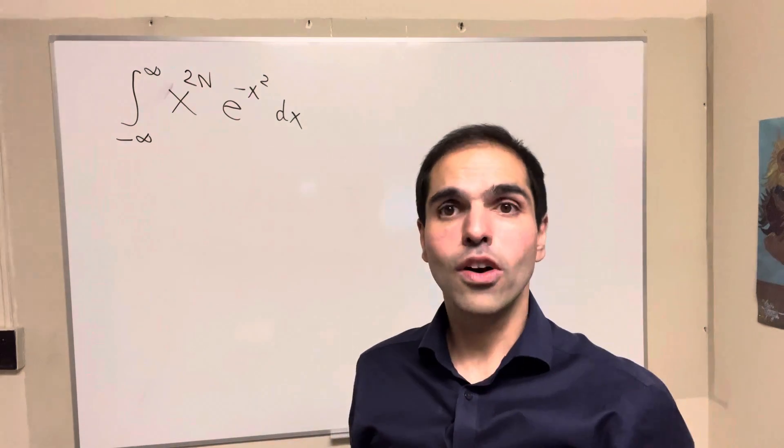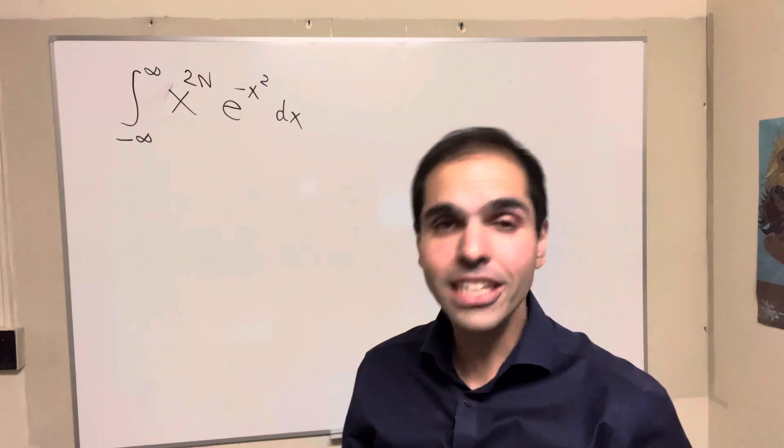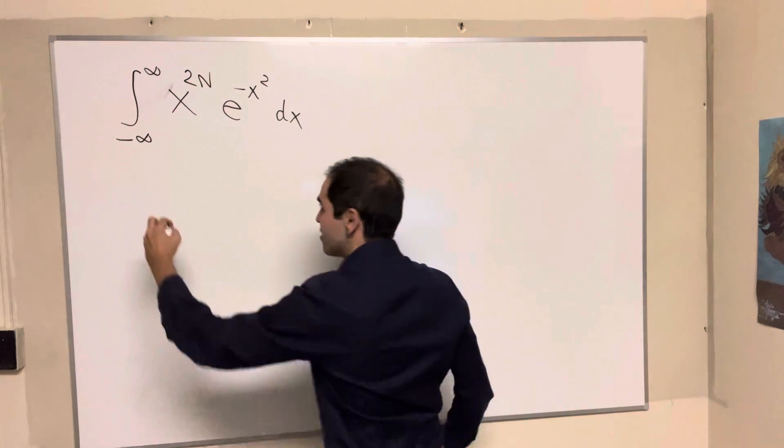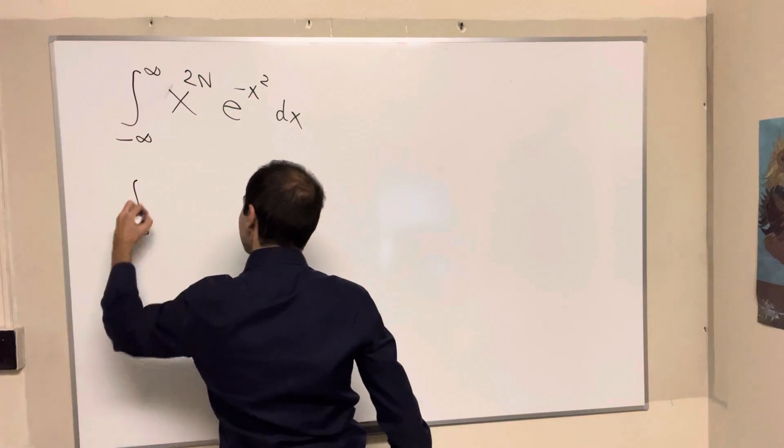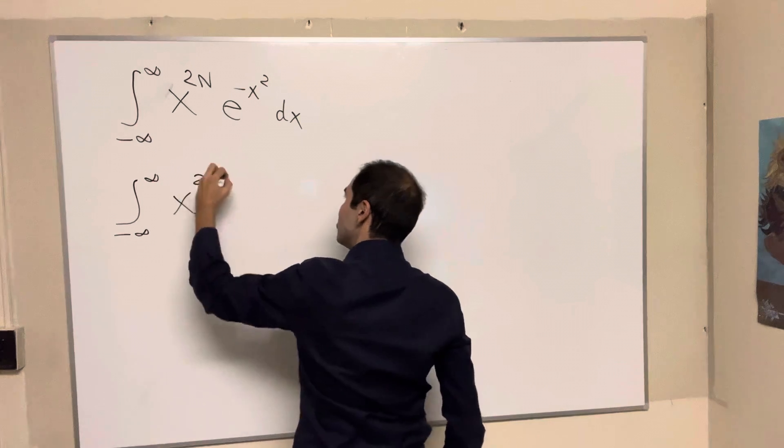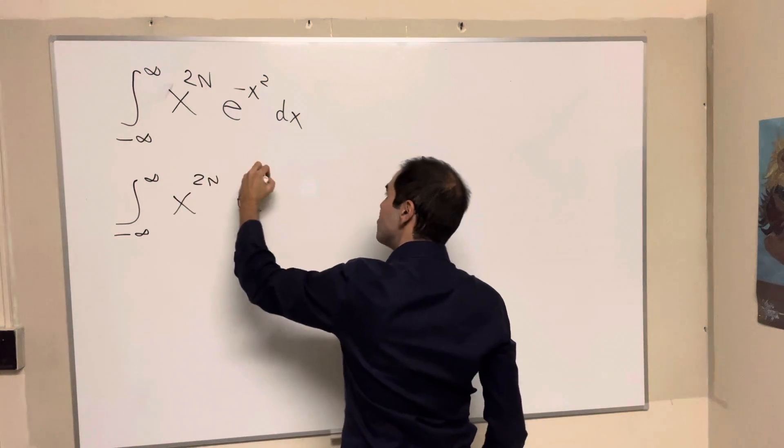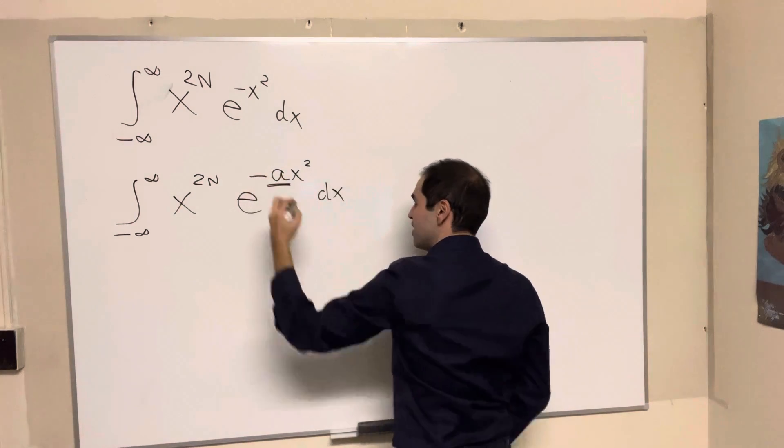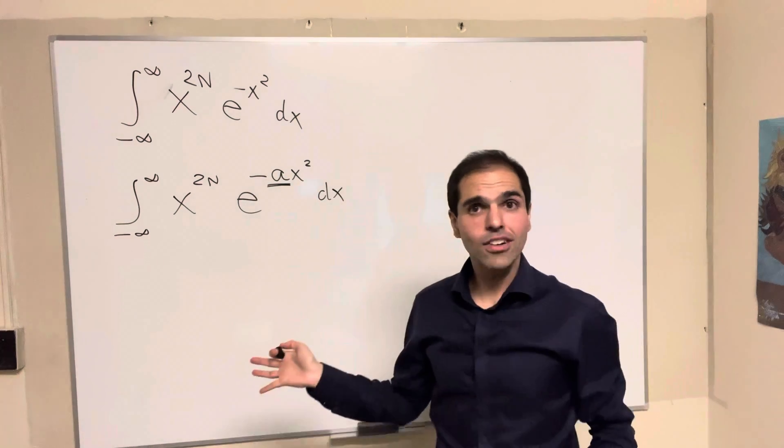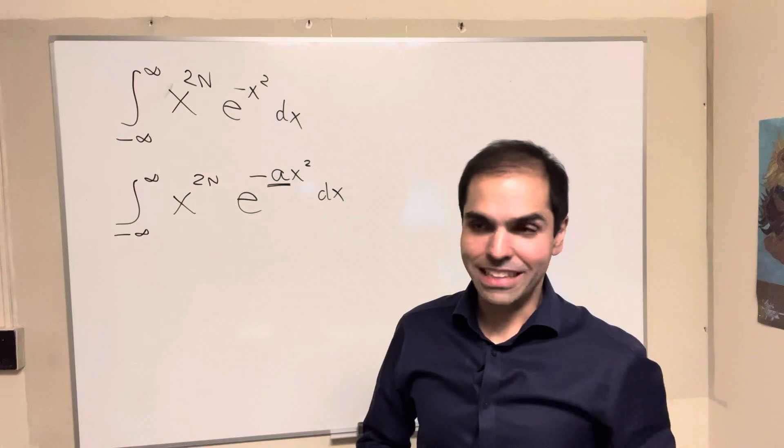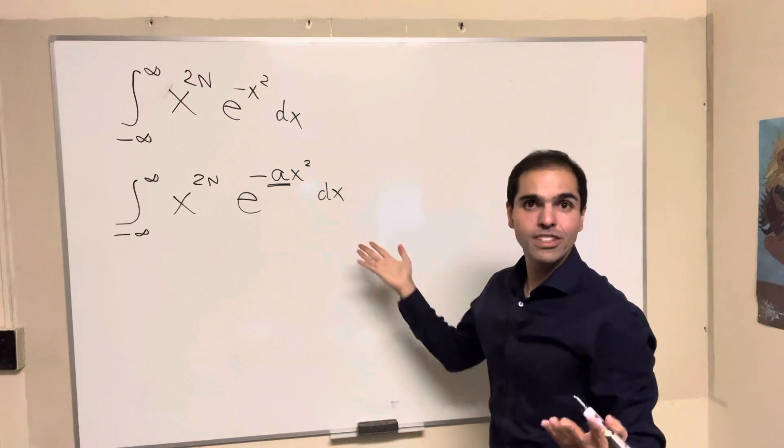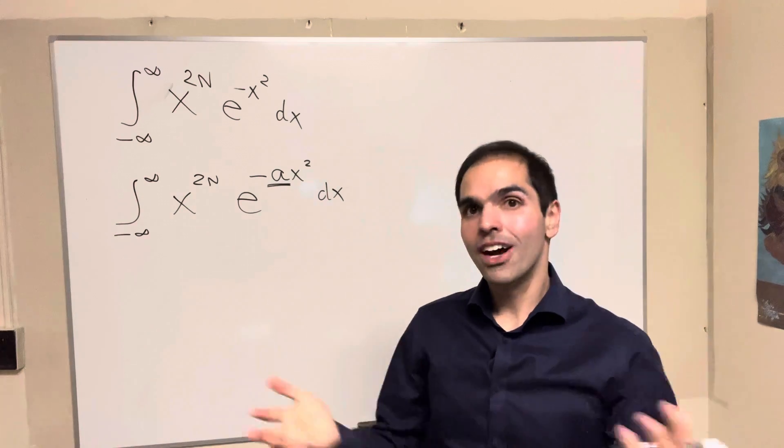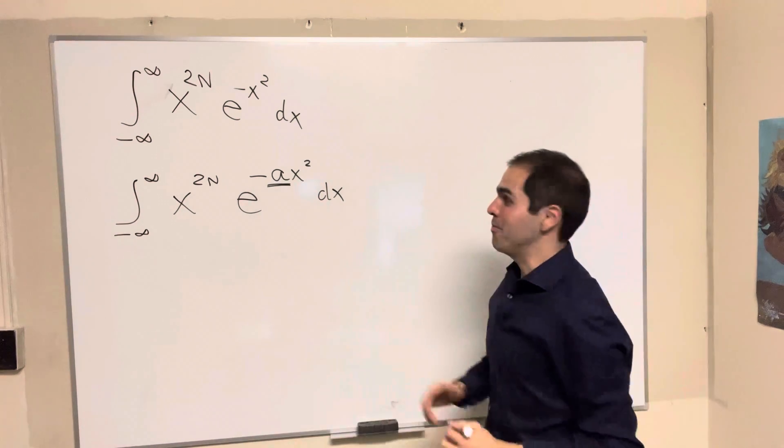And the way to solve this problem is to make it even more complicated. So instead of solving this, let's solve the integral from minus infinity to infinity of x to the 2n e of minus a x squared dx. Kind of like a reverse Feynman technique, if you wish. Or as we say in French, pourquoi faire simple si on peut faire compliqué? Why make things easier if we can do it more complicated?